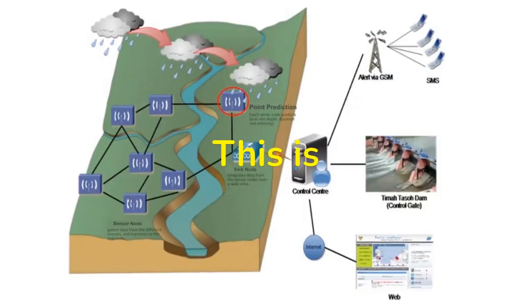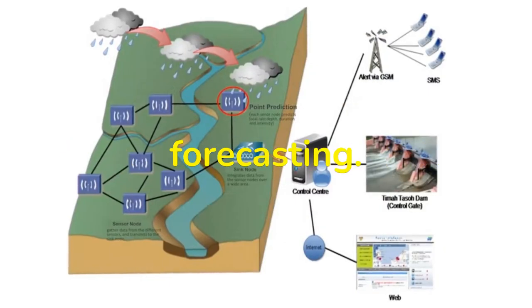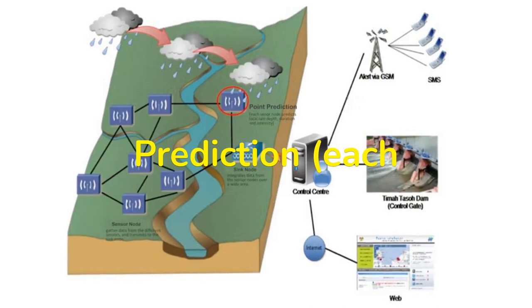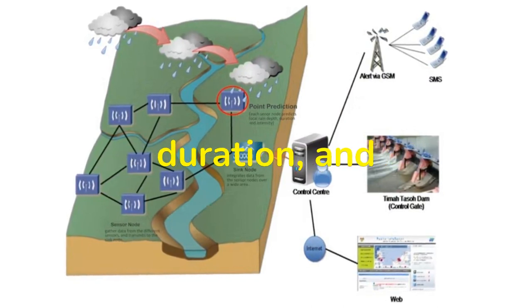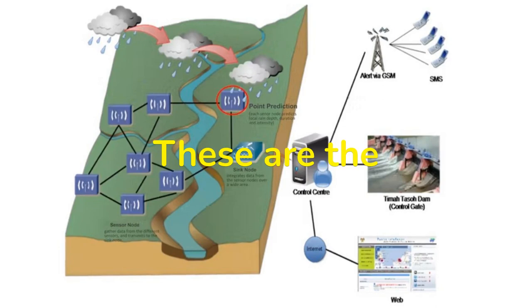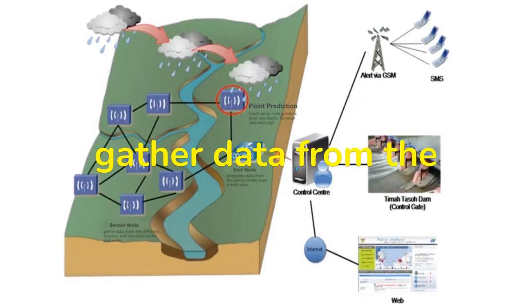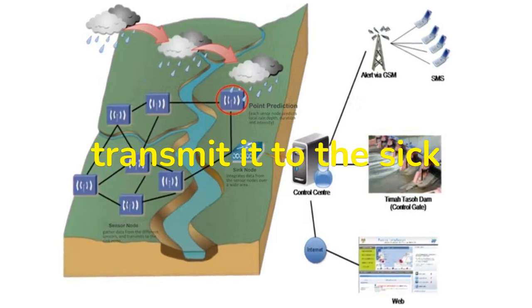This is AI-based tropical rainfall forecasting. Point prediction: Each sensor node predicts local rain depth, duration, and intensity. These are the sensor nodes that gather data from the different sensors and transmit it to the sync node.